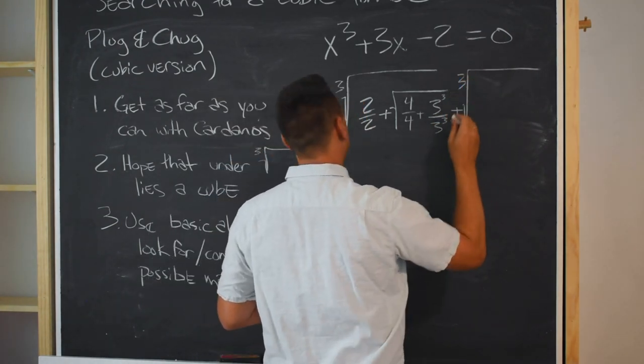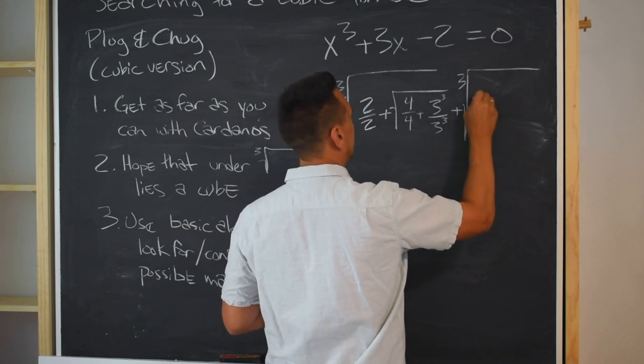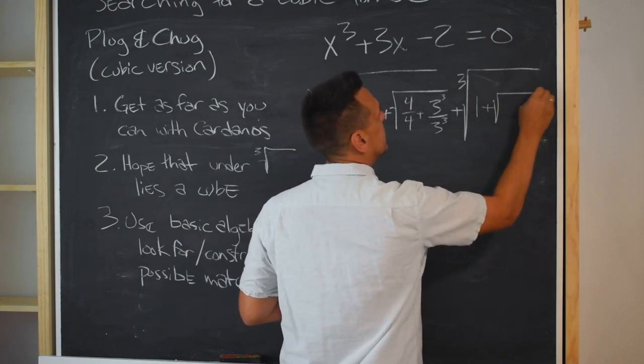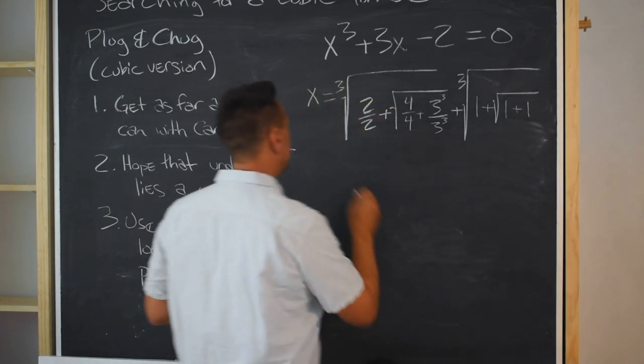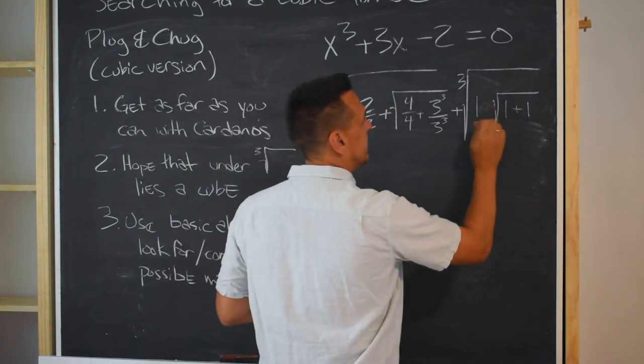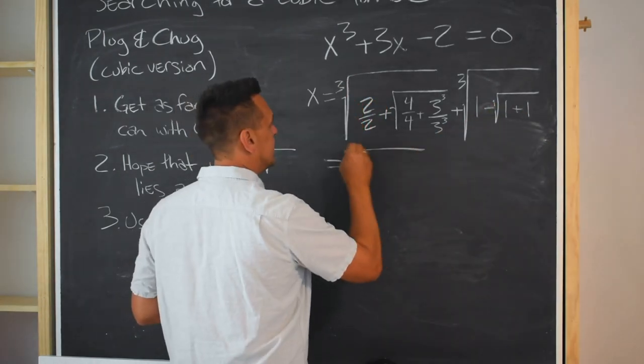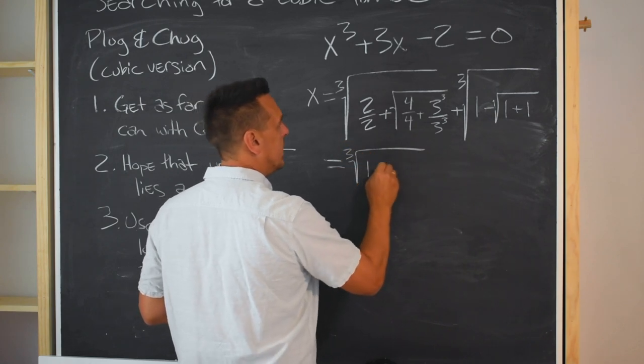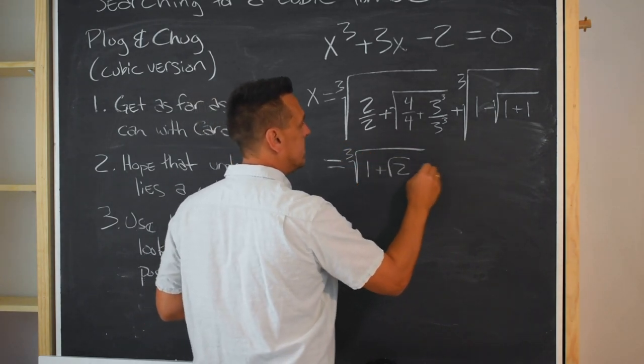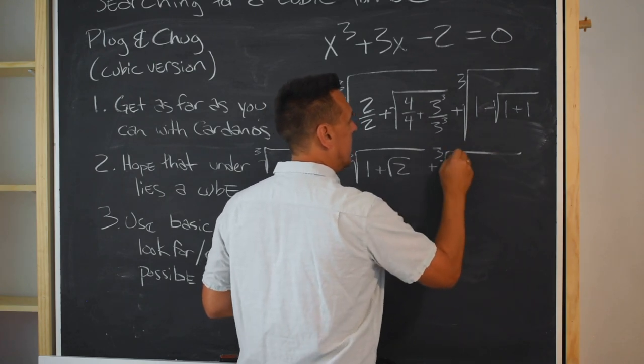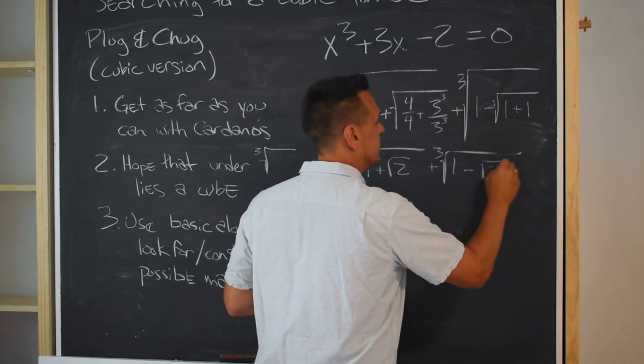I hate fractions almost as much as you do. So this is going to be 1 plus the square root of 1 plus 1. So, or I'm sorry, this one is minus. All right, so there's a cube root of 1 plus the square root of 2, plus the cube root of 1 minus the square root of 2.